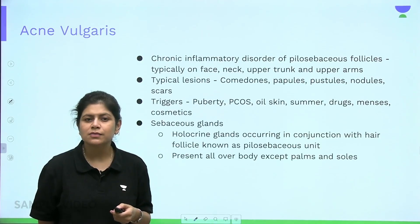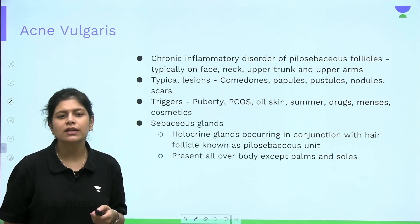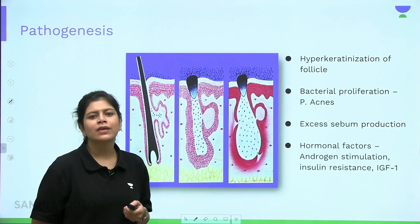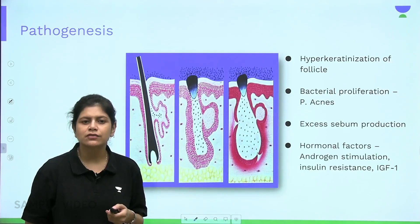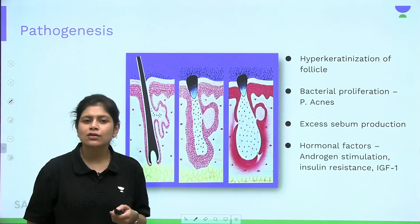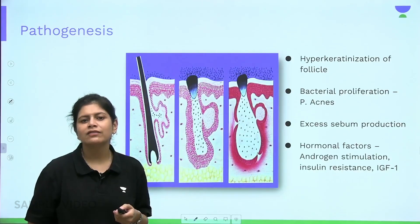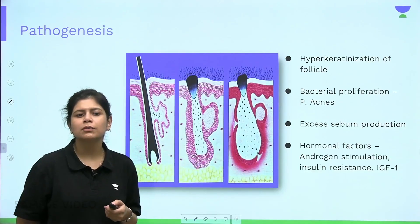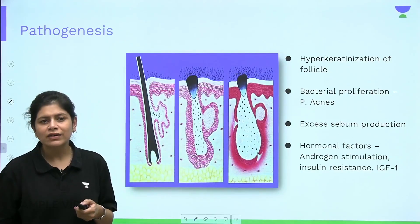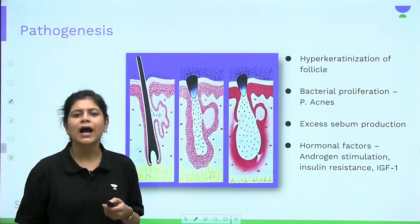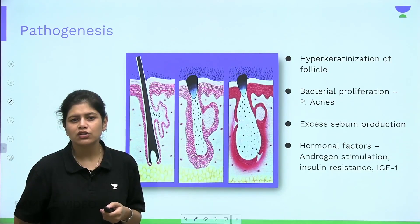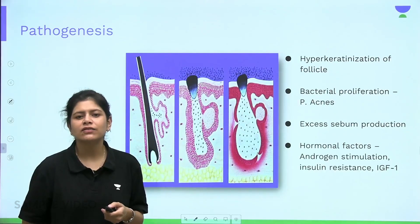The pilosebaceous unit consists of the sebaceous gland and hair follicle, present all over the body except the palms and soles. In acne, the primary event is blockage of the sebaceous duct, causing retention of contents — a good medium for Propionibacterium acnes to multiply, which incites inflammation and neutrophil chemotaxis in the dermis. The initiating event is microcomedone formation due to hyperkeratinization of the hair follicle, with additional factors including bacterial proliferation, excess sebum production, and hormonal factors like androgen stimulation, insulin resistance, and IGF-1 release.